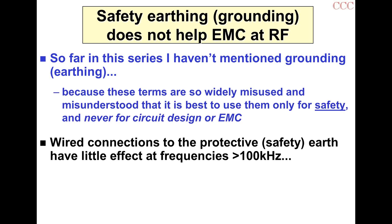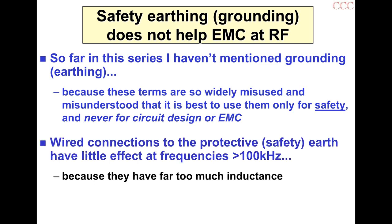The green and yellow wire in the mains lead — or the green wire in some countries — which connects you to the protective grounding or earthing system, has little effect at frequencies above 100 kHz for two reasons. First, it's a wire with far too much inductance — about one microhenry per meter, which at 1 MHz would be 6.3 ohms, and at 1 GHz would be 6,300 ohms.